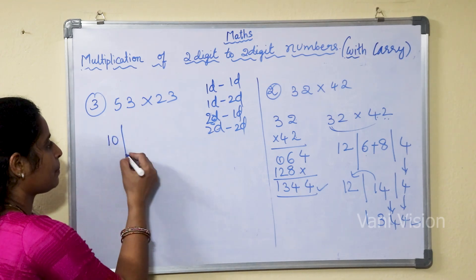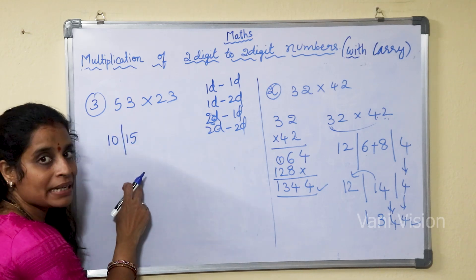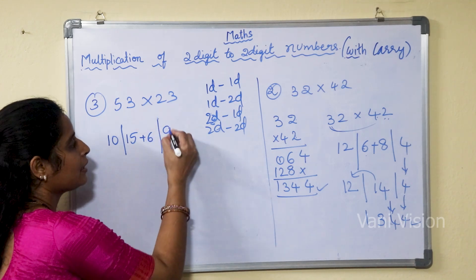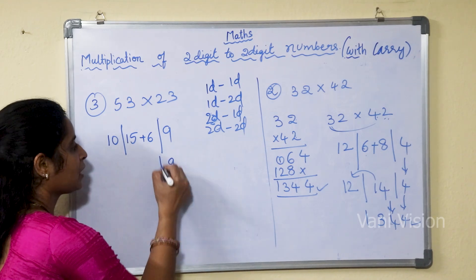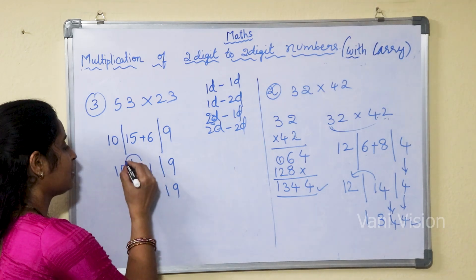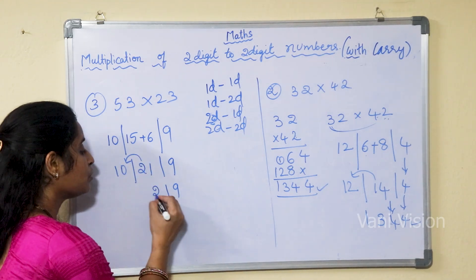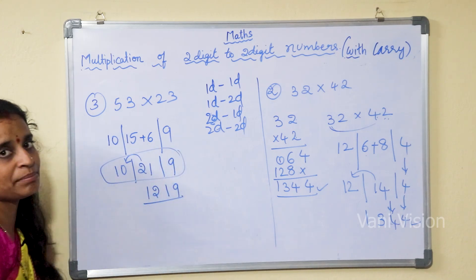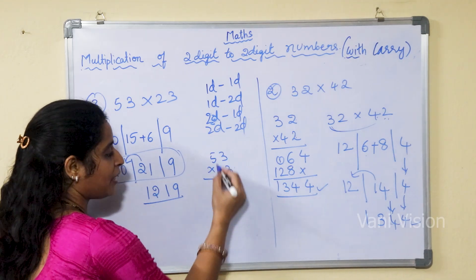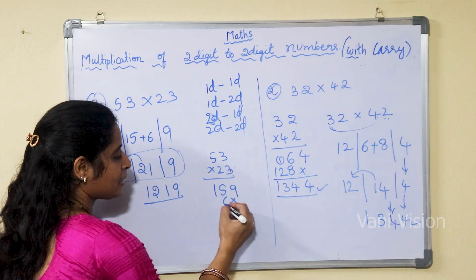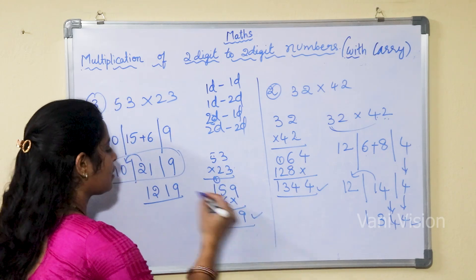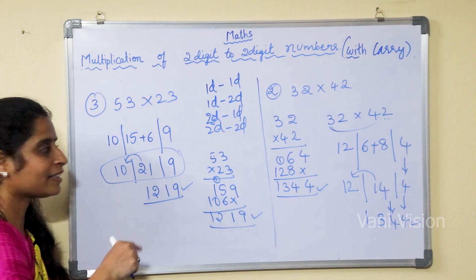Now 5 twos are 10 — separate. 5 threes are 15. Plus 3 twos are 6, kept here. Then separate — 3 threes are 9. Now write 9. 15 plus 6 is 21. And then 10. So 9, then 1 — this 2 will be added with 0, making it 2, giving 1. Here we are using the balancing method to balance these numbers. Now let us check: 53 into 23, 3 threes are 9, 3 fives are 15, 2 threes are 6, 2 fives are 10. So 9, 11 — 1 goes as carry — giving 1219. The answer is the same. The method is easy too.